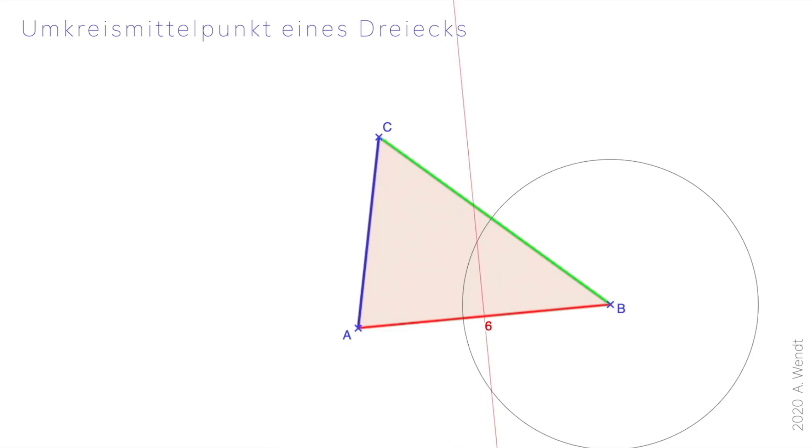Ich blende die Kreise wieder aus. Die Mittelsenkrechte auf der Seite AC erhalte ich entsprechend. Und dann wollen wir auch noch die Mittelsenkrechte auf der Seite BC haben. Auffällig ist, dass die Mittelsenkrechten des Dreiecks sich genau in diesem Punkt M schneiden.